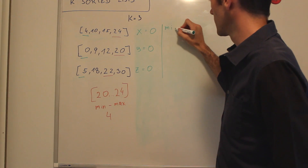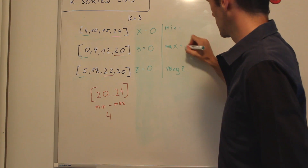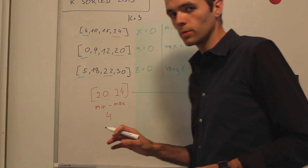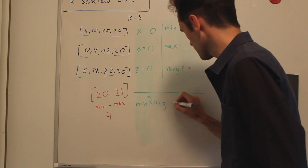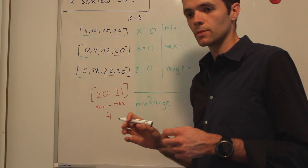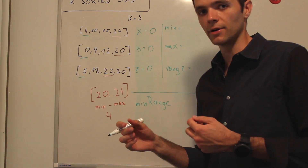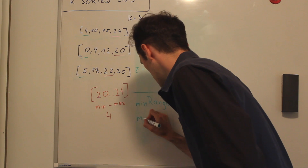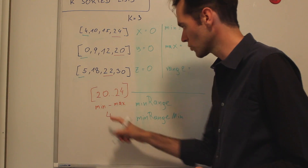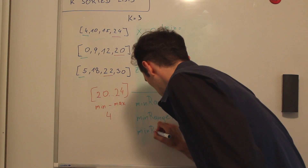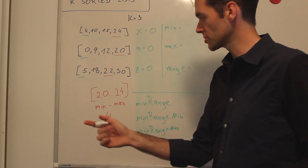We have three pointers tracking current min, max, and range. We then have a global tracking system — I'm going to call it the min range — which is what we're most interested in. The output of this problem will be the range, meaning the left element and the right element of this min range. We'll also keep track of the actual number of the left side and the right side. I'll call it min range min for the smaller element, which will be 20, and min range max for the right element, which will be 24 at the end.